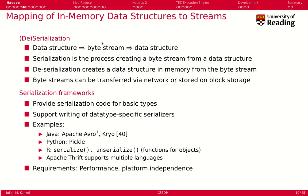Byte streams can be stored in a file or transferred over the network. Since it is tedious to implement serialization manually — for example, how do you serialize floating-point data, a table, or a tree — serialization frameworks exist. These frameworks provide code and tools that ease the process, including serialization for basic types like floating-point numbers and integers, arrays of floats, and support for writing custom serializers for specific data structures like trees. Various frameworks exist for different programming languages.